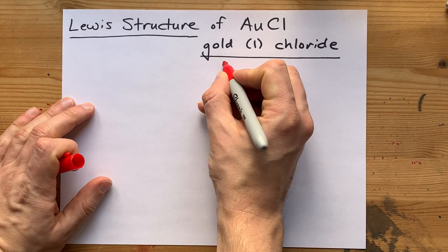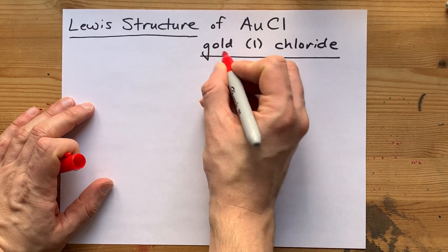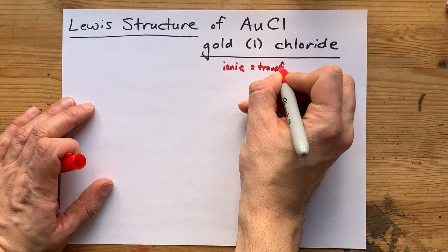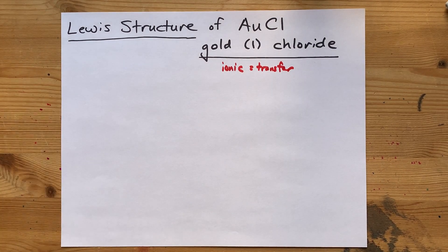The reason I'm saying that is because a metal and a non-metal always combine to make an ionic compound, which is a transfer of electrons from one to the other.